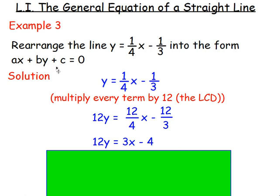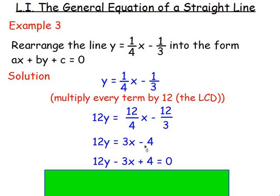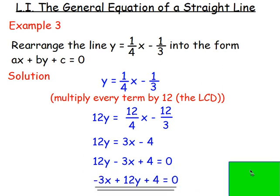Once again, we want it in the form ax plus by plus c equals 0, so move everything over to the left hand side. Subtract 3x from both sides and add 4 to both sides — or move the 3x over so it becomes minus, and move the negative 4 so it becomes a plus. That gives 12y take away 3x plus 4 equals 0. If you want to write it with x first, then y, then the number equals 0, you can rearrange to negative 3x plus 12y plus 4 equals 0. That's really just the general equation of a straight line — all you're wanting to do is rearrange y equals mx plus c, with a few trickier questions thrown in.